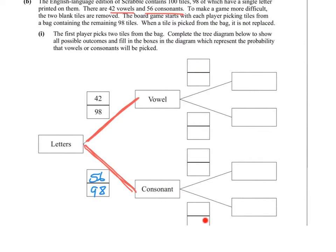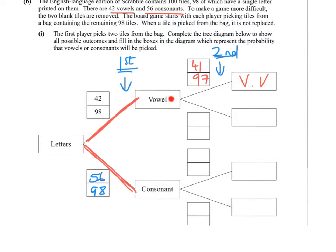This is a tree diagram. Tree diagrams are about events — the more branches, the more events. The first branch is the first time you pick out a letter; the second branches are the second pick. If you picked a vowel first, the chance of a vowel again on the second pick is 41 out of 97 — only 41 vowels left and only 97 letters remaining. So the chance of vowel and vowel is 42/98 multiplied by 41/97.